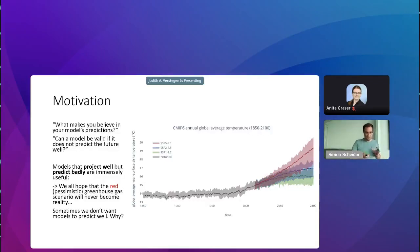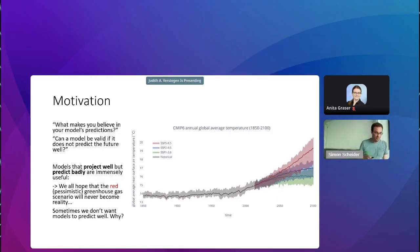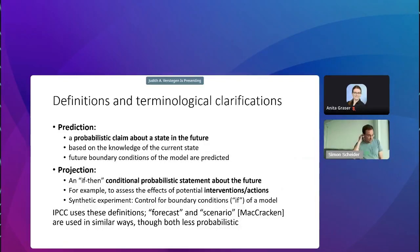On the right-hand side of the slide there is a famous model from the IPCC on annual global average temperature development. If you look at the red line, that is a particular climate prediction scenario. We all hope the red line is actually unrealistic — that it will never occur. So basically we want a model to predict badly. This example shows that sometimes we want models to predict badly, and the question is why, and what does this mean for talking about model validity in terms of prediction.